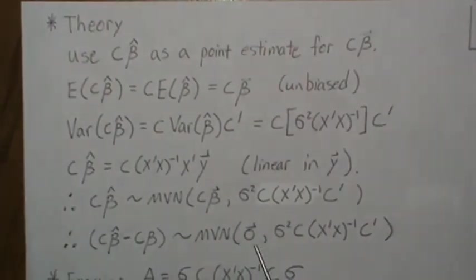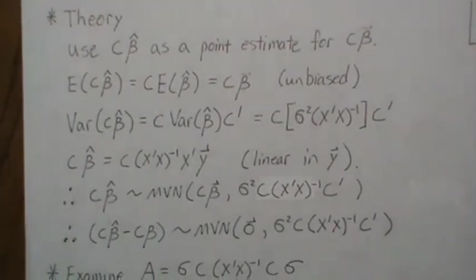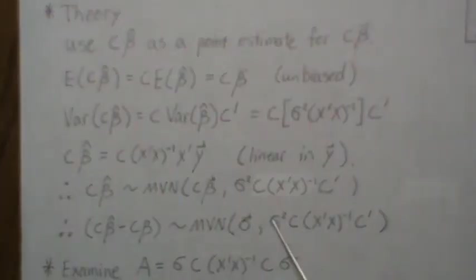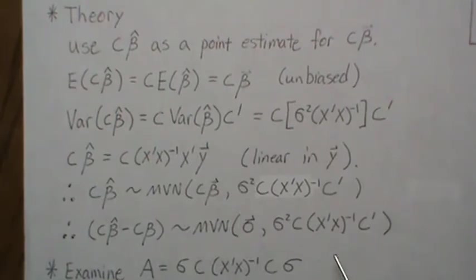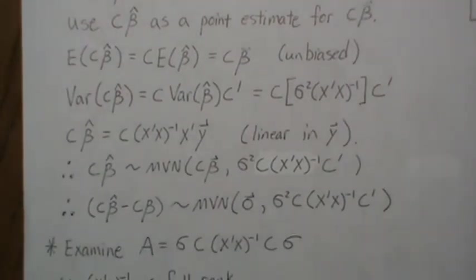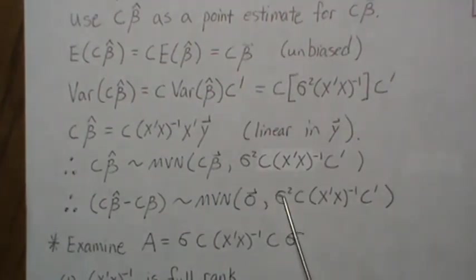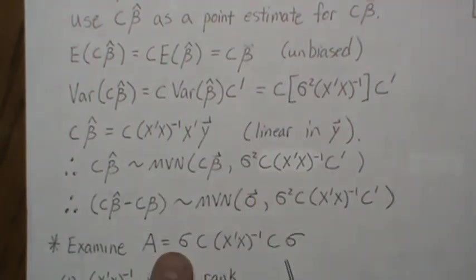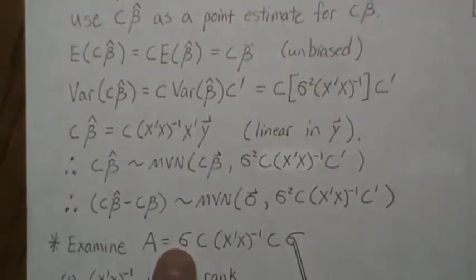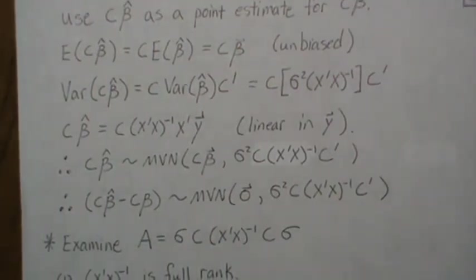If we subtract the mean, C*beta_hat - C*beta is multivariate normal with mean vector zero and the same variance-covariance structure. We need to study this variance-covariance structure more carefully. Pulling out sigma-squared by taking its square root and pre- and post-multiplying makes the subsequent steps clearer.